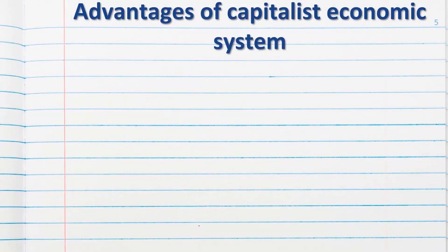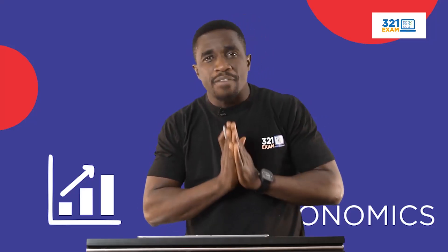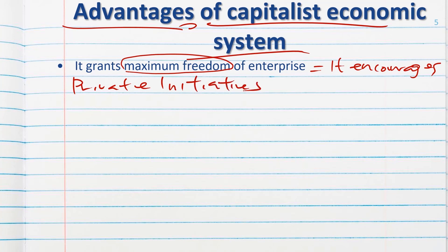Now let's look at the advantages of a capitalist economic system. Number one, it grants maximum freedom of enterprise. Private individuals have the capacity to do what they want to do, which means it encourages private initiatives.